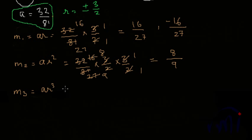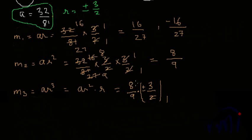The third geometric mean M3 = AR³ = AR² × r. Using M2 = 8/9 as AR², multiplied by r = ±3/2: (8/9) × (3/2) = 24/18 = 4/3. So M3 = 4/3 or −4/3.